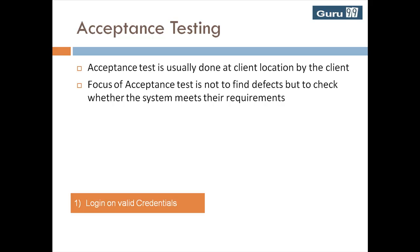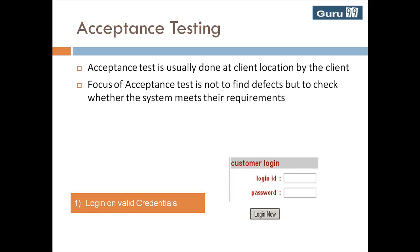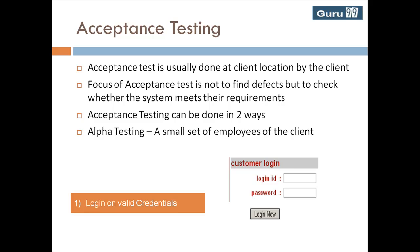Since this is the first time the client sees their requirements, which are plain text, translated into an actual working system, acceptance testing can be done in two ways. Alpha testing: a small set of employees of the client — in our case, employees of the bank — will use the system as the end user would.